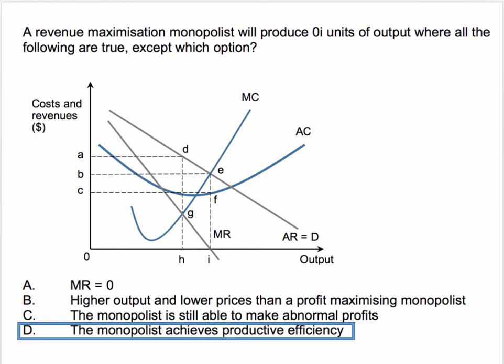So options A, B, and C are all correct. Option D is incorrect because the firm does not produce at the minimum point of the average cost curve, where MC cuts AC, where unit costs of production are minimised — that is the condition for productive efficiency. So D is the wrong answer and, therefore, the right answer to this question.